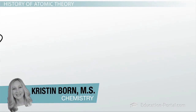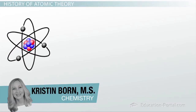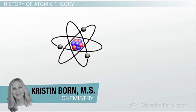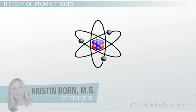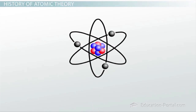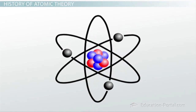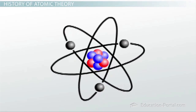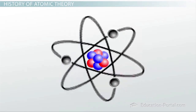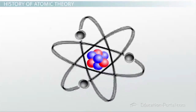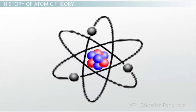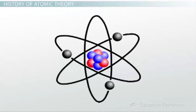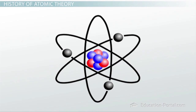Picture an atom. What does it look like? Most likely it will resemble something like this: a fairly large nucleus surrounded by orbiting electrons whizzing around the nucleus. This image is a popular icon of the atom, but it only vaguely represents our current model of what the atom looks like.